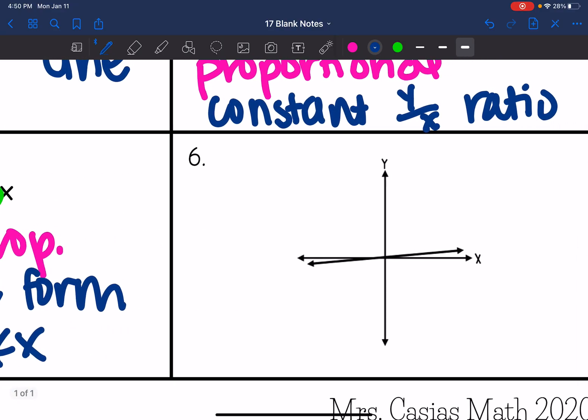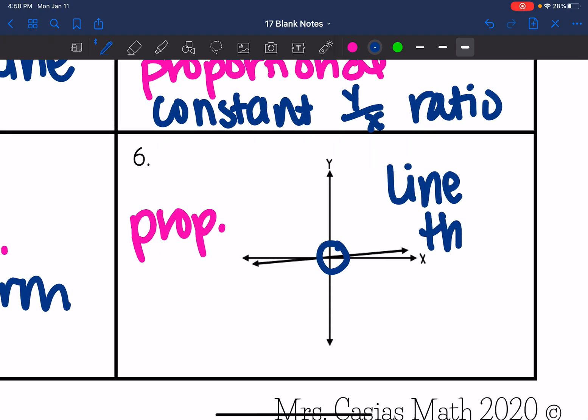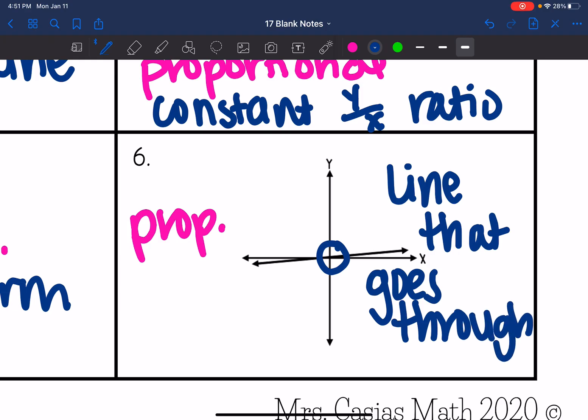And the last one, we have a line. And it is going through 0, 0. So this one is proportional. And we would say, line that goes through 0, 0.